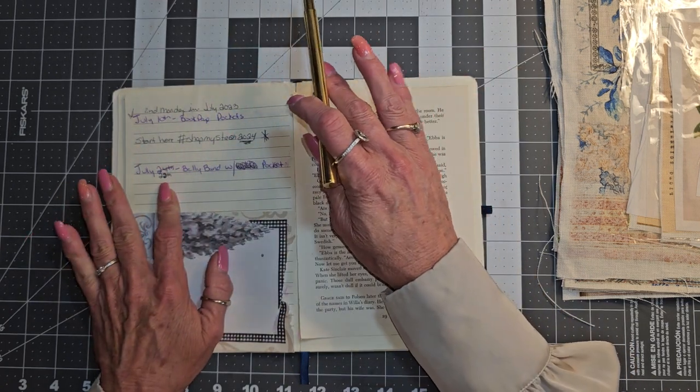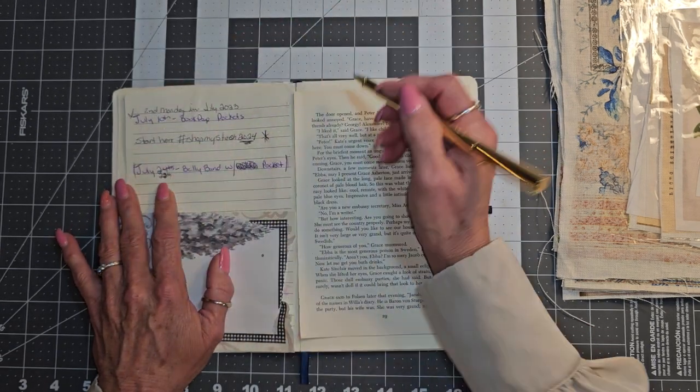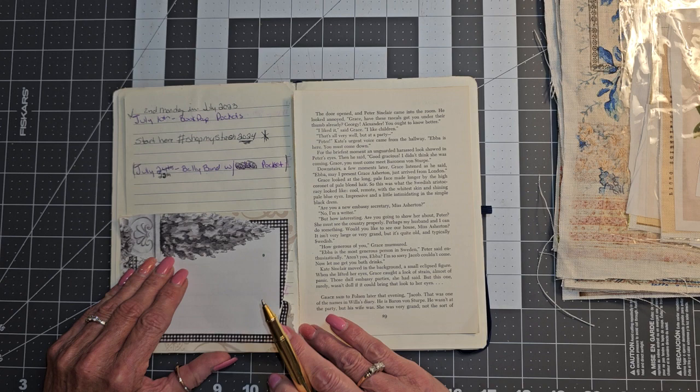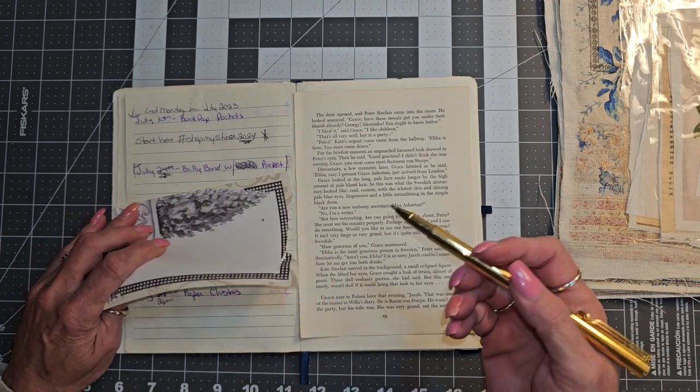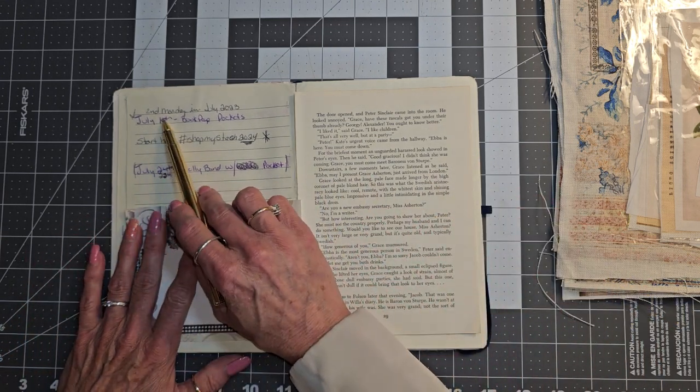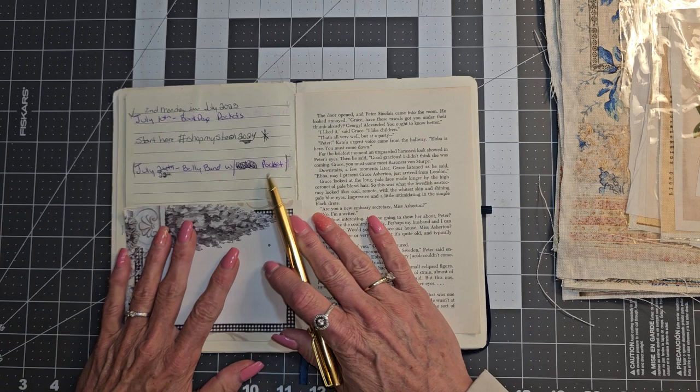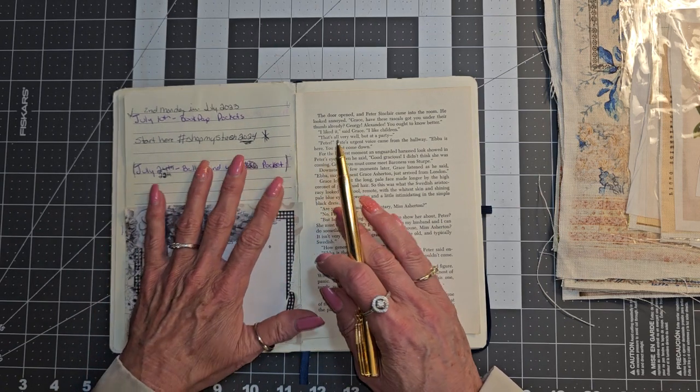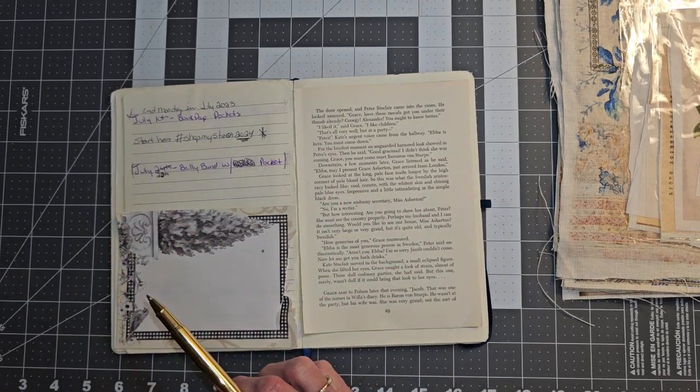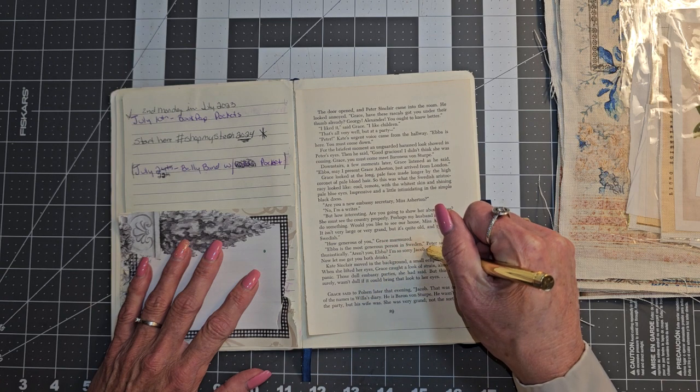So, make any kind of belly band that you like. Just make sure it is a belly band with a pocket. Post your video or your pictures on July the 22nd. And at the end of this video here, I will give you the prompt for the next video, which will be on August the 12th and then the 26th. Again, you will post your video on the 2nd and 4th Monday in the month. So, yeah, I'm really excited. I hope some of you guys will join me. And again, if you don't make videos, that's fine. If you do make videos, please tag me and leave a link to my YouTube channel. And use the hashtag, hashtag ShopMyStash2024.